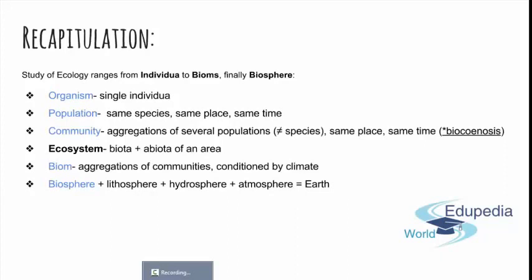In previous presentations, we were talking about all these levels of organization of different species, independent of species, in the matter of ecology and how it functions. So we have organism, population, community, ecosystem, biome, and biosphere, depending on the complexity of organism.